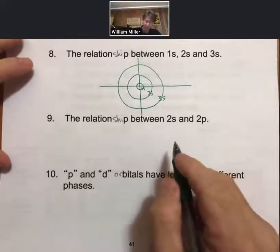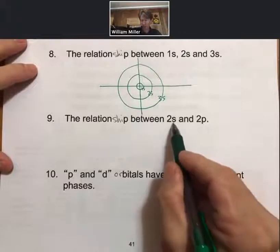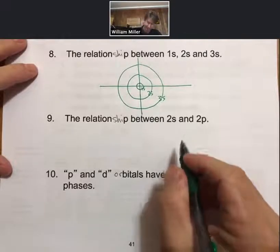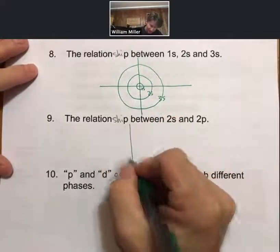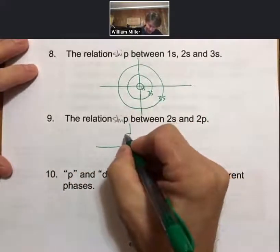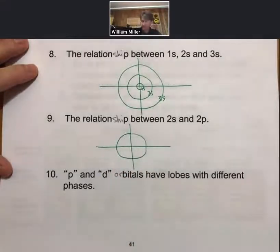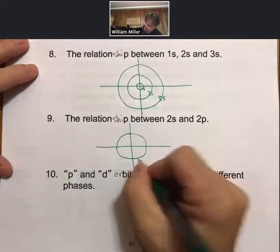So the relationship between 2s and 2p—well, the short answer is that 2p fits within 2s. And so that means that if I draw 2s, similar to what I've just done above, then I'll label it 2s.